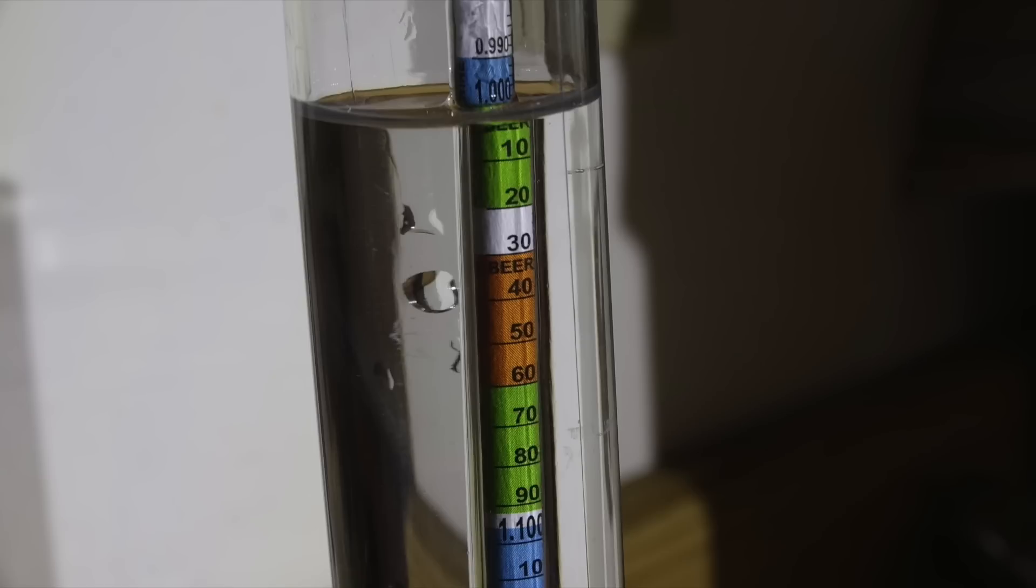Many times it'll be something like 1.055 or something like that. You need to take that measurement of the wort before you ferment because you're going to compare that later.